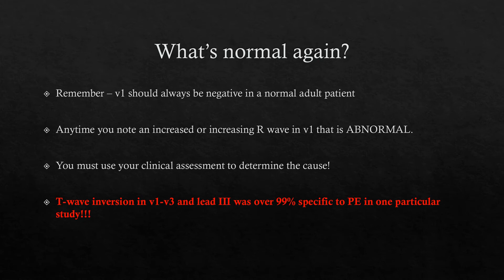Specificity means: when you see this pattern, how many times out of 100 is it that disease? T-wave inversion in V1, V2, V3, and lead III — 99 times out of 100 that patient has a PE or at least acute RV strain. All you're seeing on an EKG is RV strain; the most common cause of acute RV strain is PE. The S1Q3T3 pattern, by contrast, is only 20% specific — meaning only 2 out of 10 times you see it does it even indicate PE. Honestly, it's not a good tool for diagnosing PE.